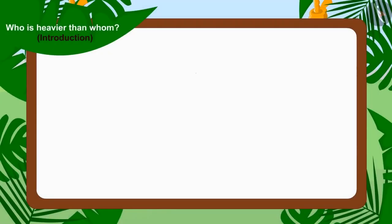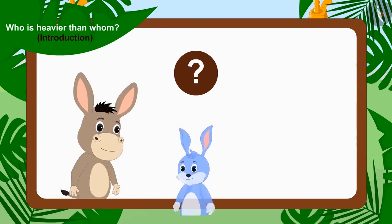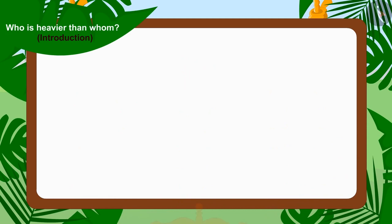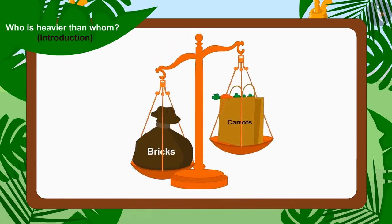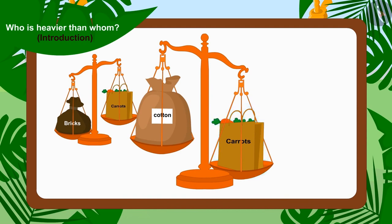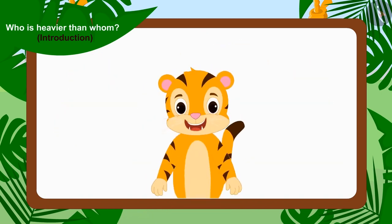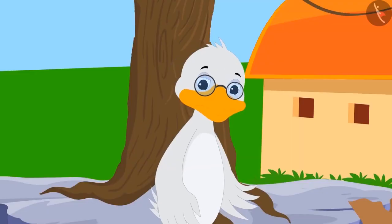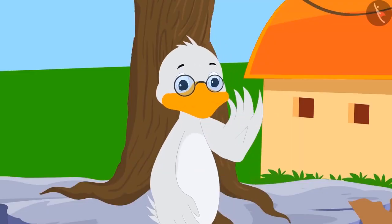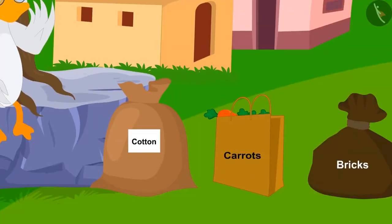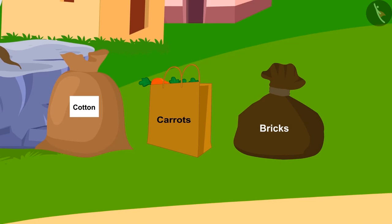Children, can you tell who will be the winner? Because Sher Khan's sack is heavier than Bunny's bag of carrots, and Bunny's bag of carrots is heavier than Bhola's sack of cotton, Sher Khan's sack filled with bricks is heavier than Bhola's cotton sack. In this way, Sher Khan is the winner of this competition. His sack with bricks is the heaviest in weight.